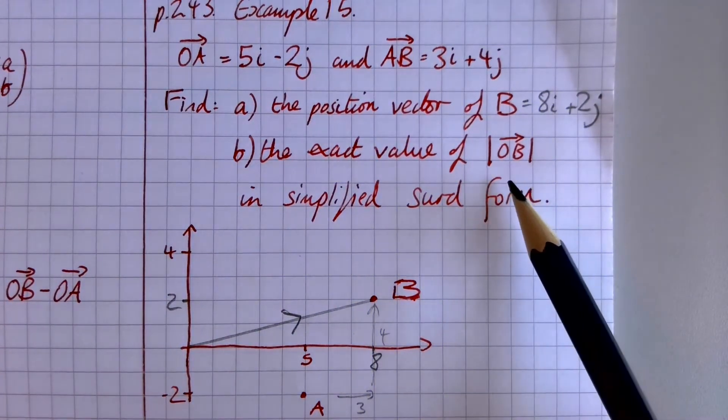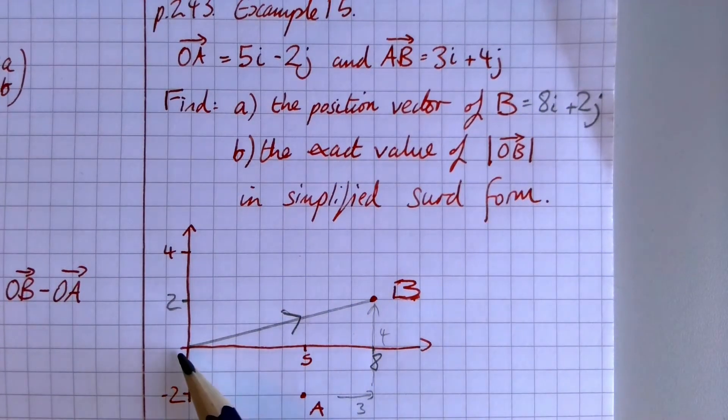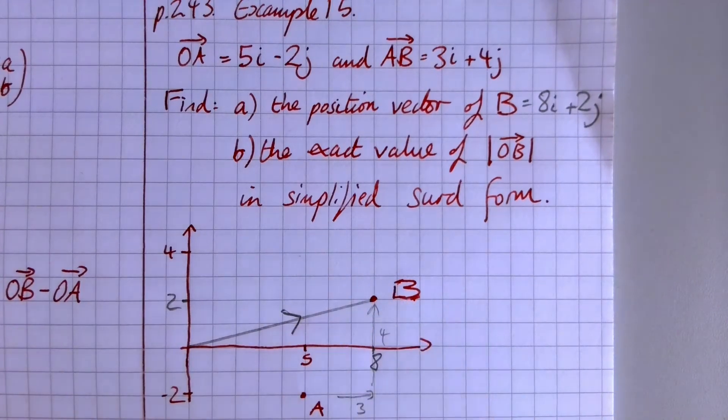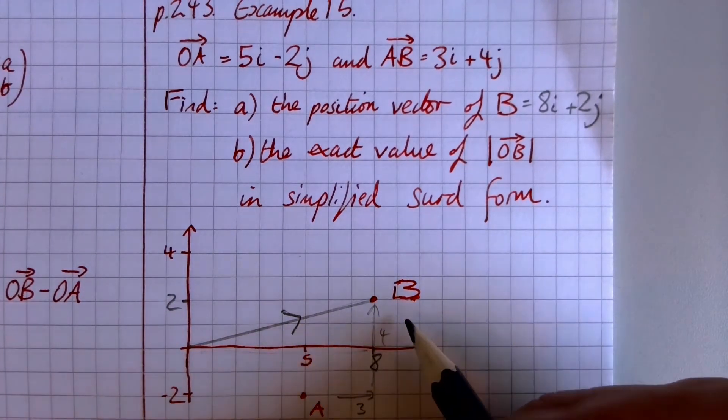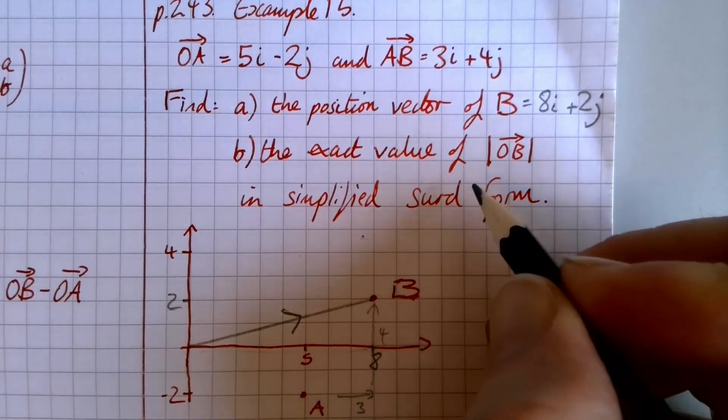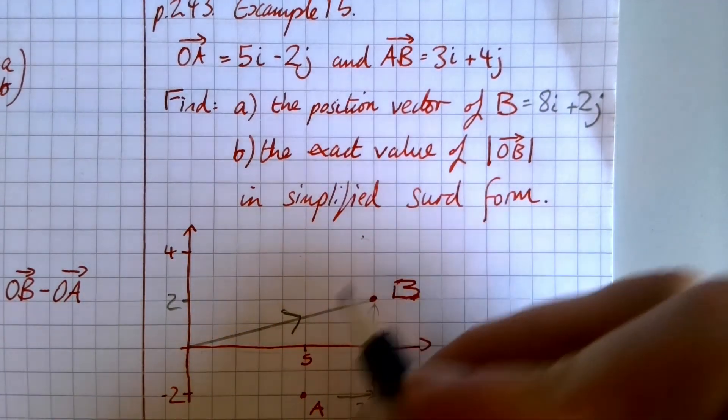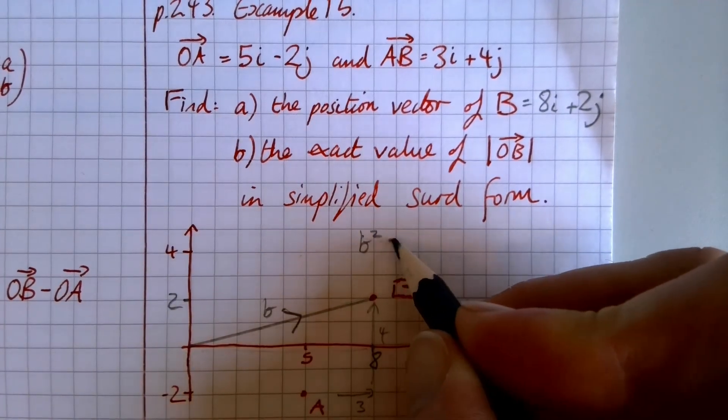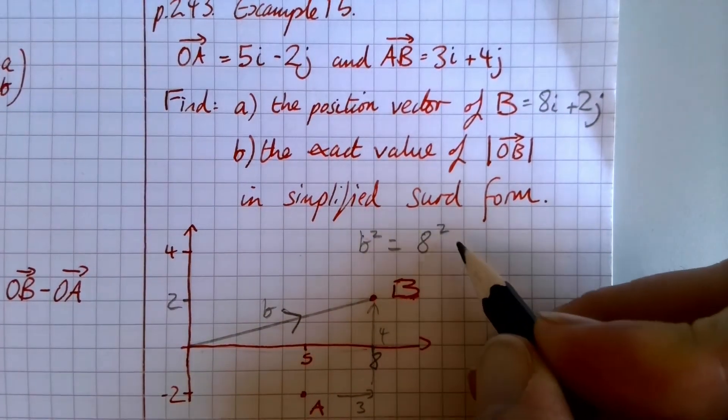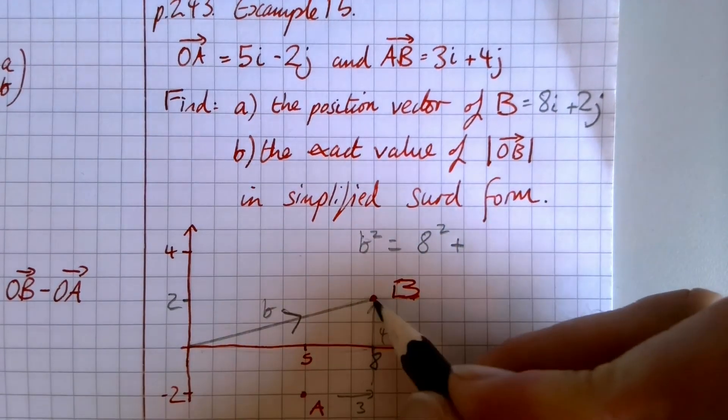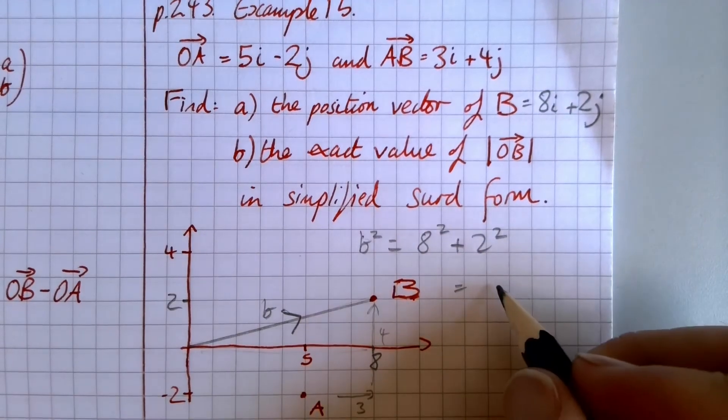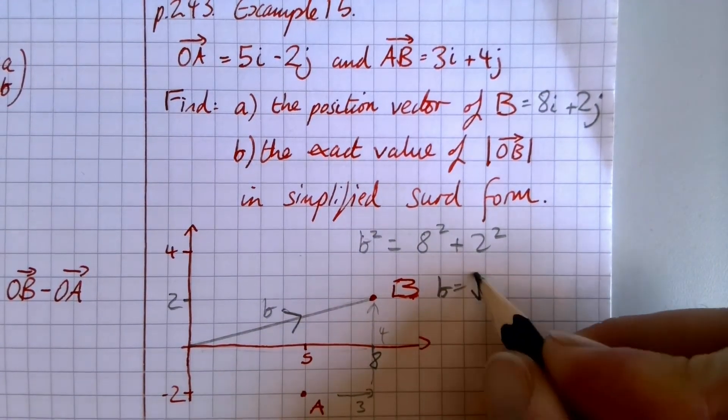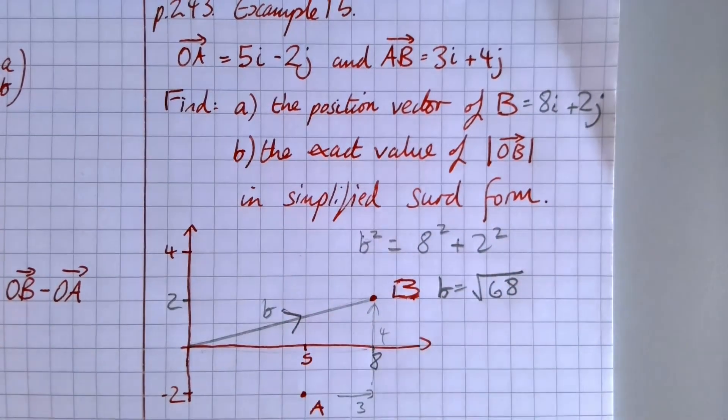And then the exact value of O to B. So that means what is the length of that line? So that's time for good old friend Pythagoras to come in. And OB, if we call that little B, B squared is going to be 8 squared plus 2 squared, which is 64 plus 4 is 68. So B will be the square root of 68.